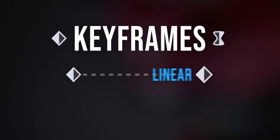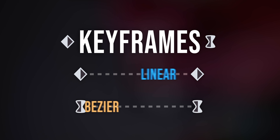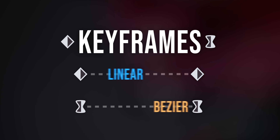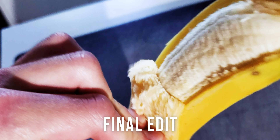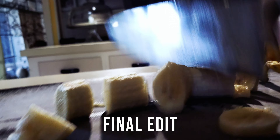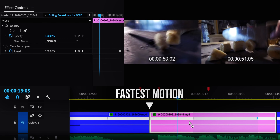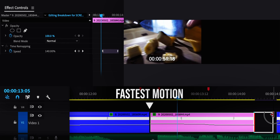Keyframes are like set points that allow you to animate properties over time. For the banana chop, which happens at the big beat drop, I speed ramped both clips so that the point of fastest motion was at the transition.